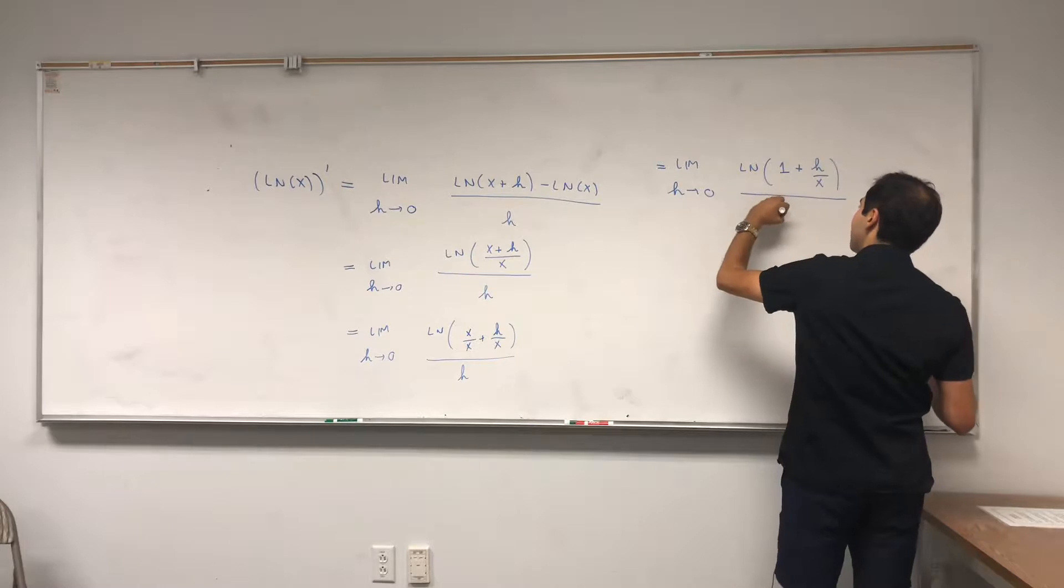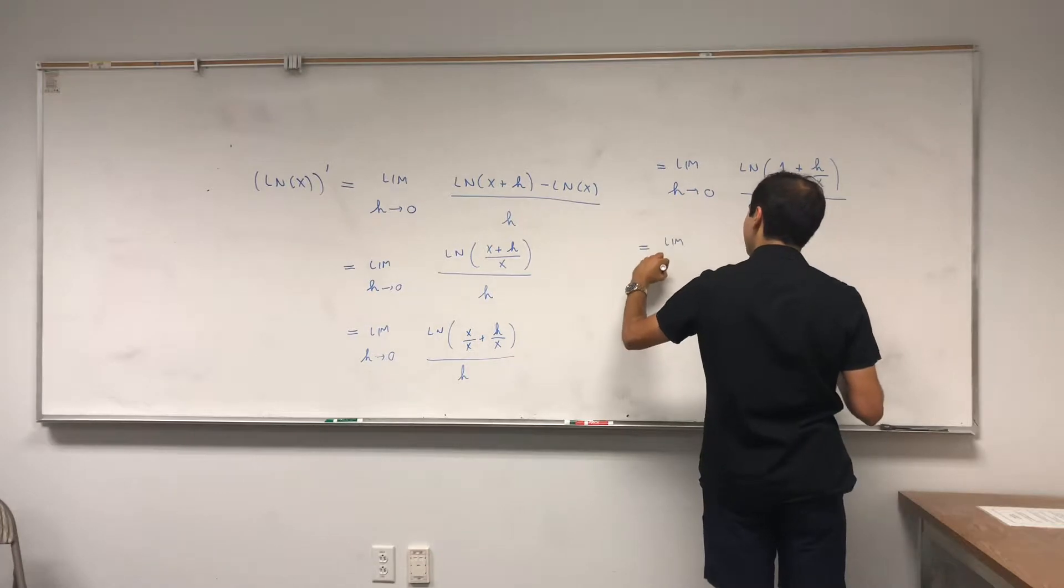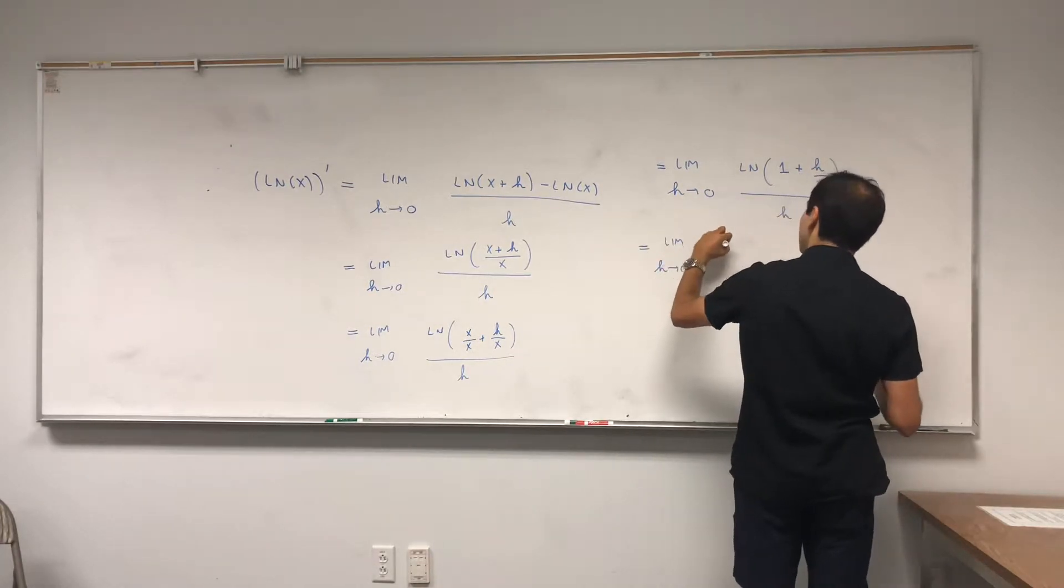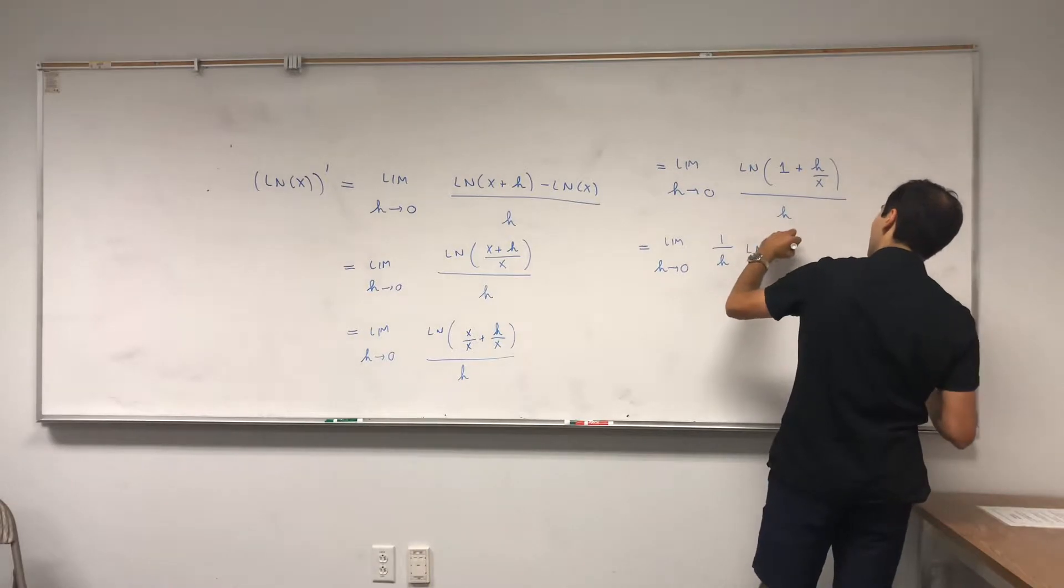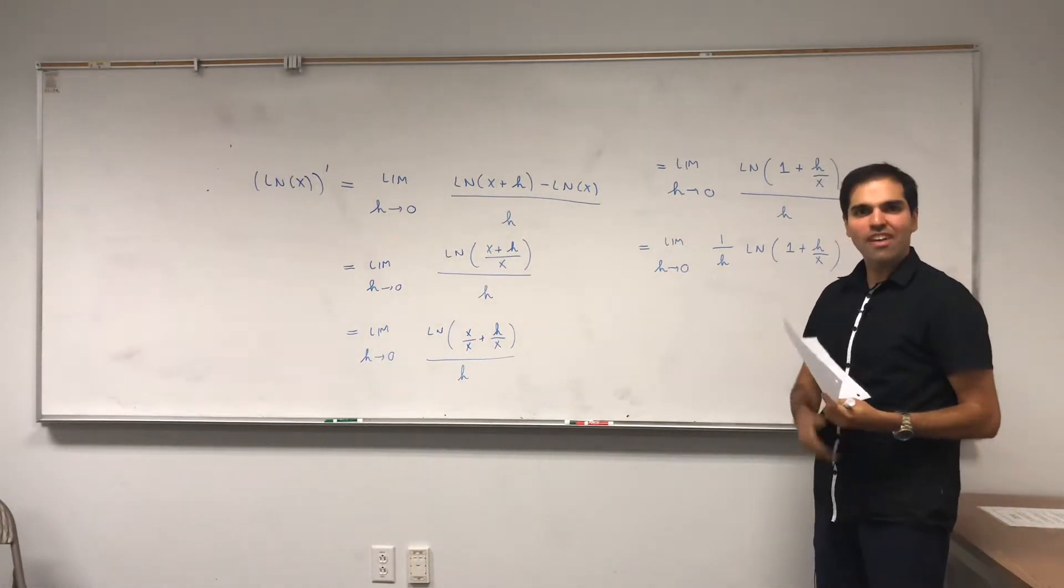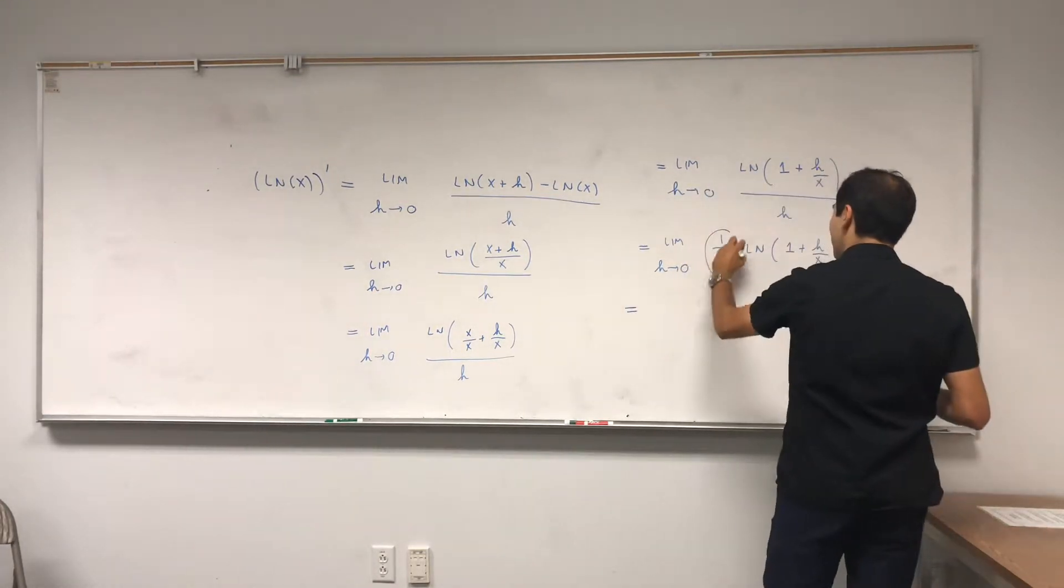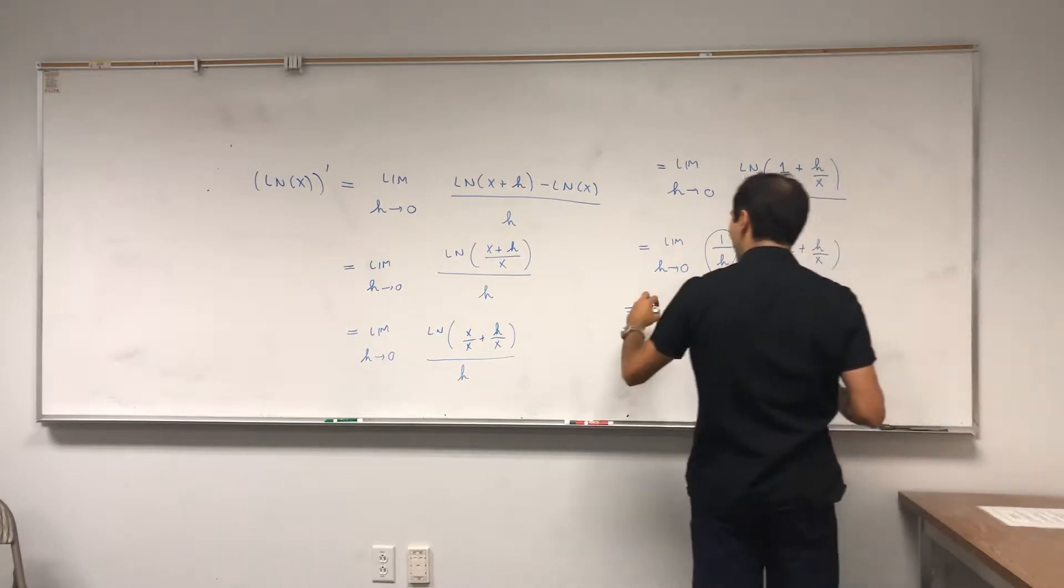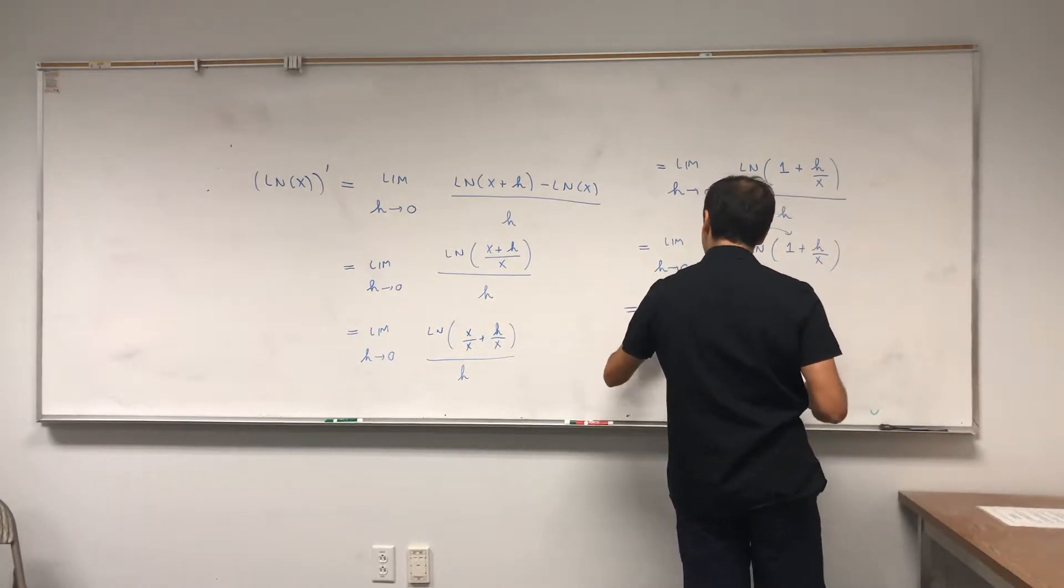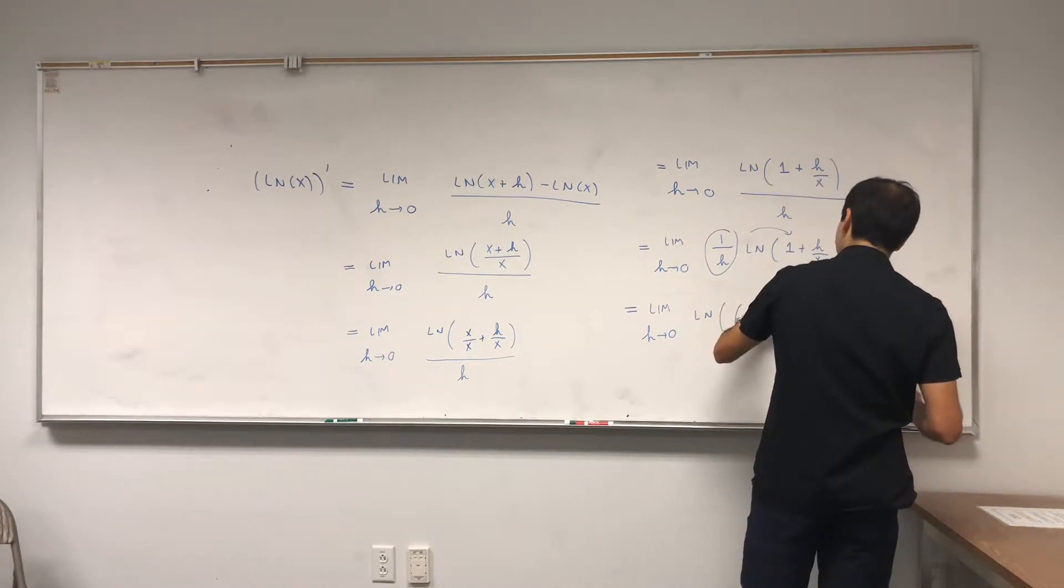But it turns out we can simplify this a little bit more. So limit h goes to 0 of 1 over h ln of 1 plus h over x. And remember this other rule of ln, so ln of a to the r is r ln of a. So in other words, this 1 over h becomes an exponent to ln and you're left with limit h goes to 0, ln of 1 plus h over x to the 1 over h.